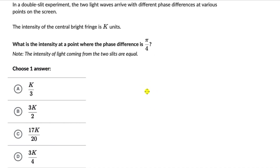Let's solve a couple of questions on intensity variation in a double slit interference experiment. In the first question, it says that in a double slit experiment the two light waves arrive with different phase differences at various points on the screen. The intensity of the central bright fringe is k units. What is the intensity at a point where the phase difference is π/4, given that the intensity of light coming from the two slits is equal?